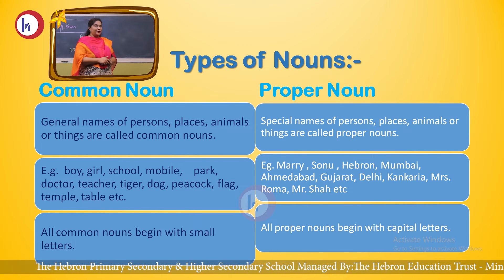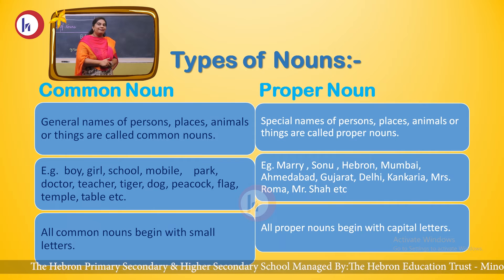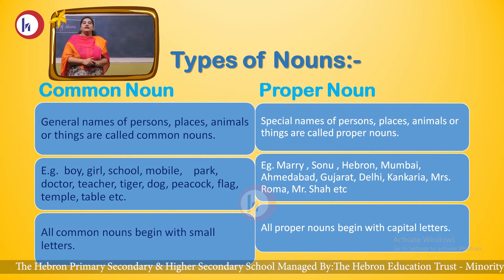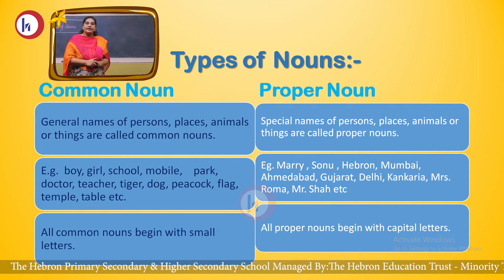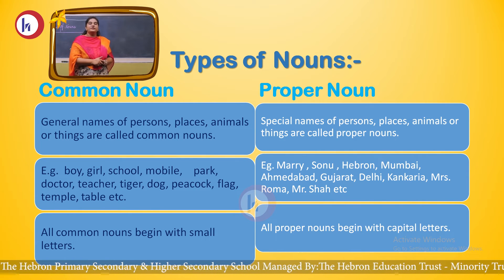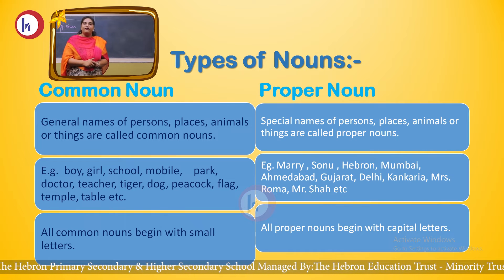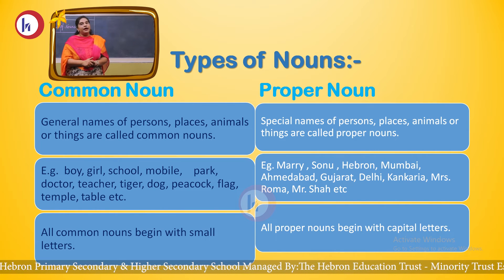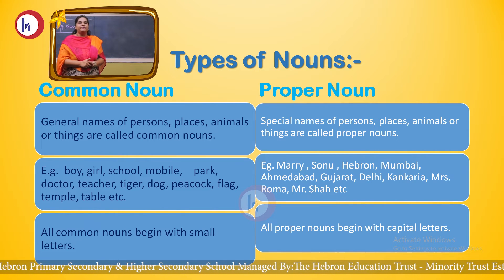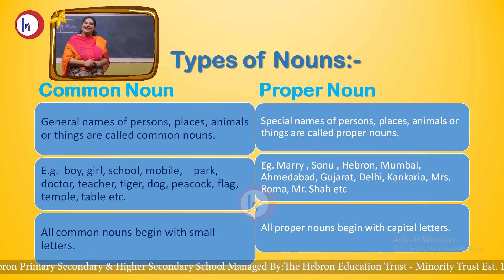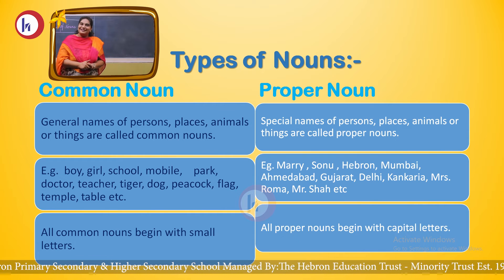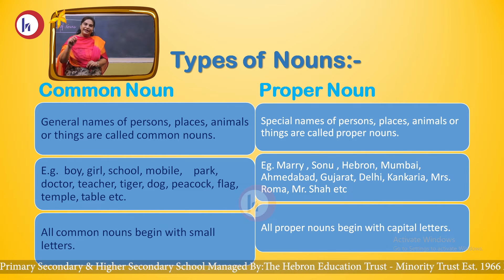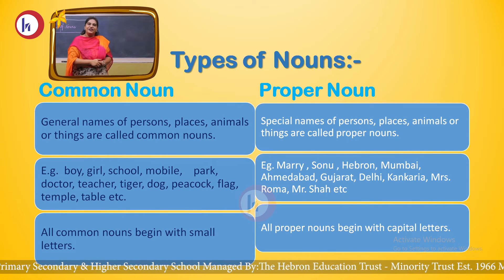Have you noticed one thing? Common nouns are always written in small letters — they begin with a small letter. Proper nouns always begin with a capital letter. Have you noticed that? Just have a look at it. Thank you.